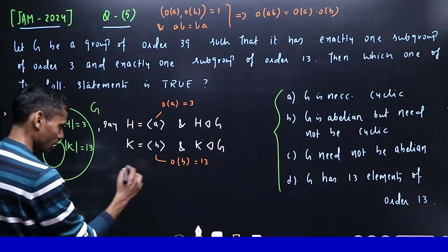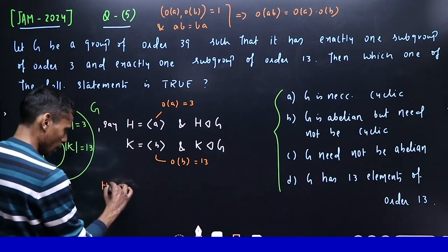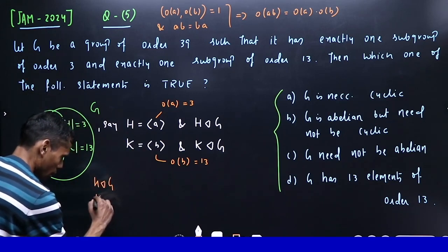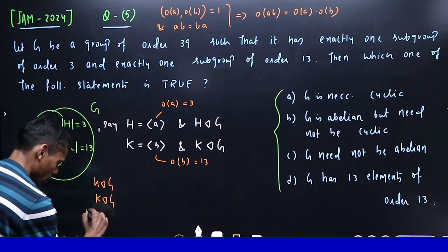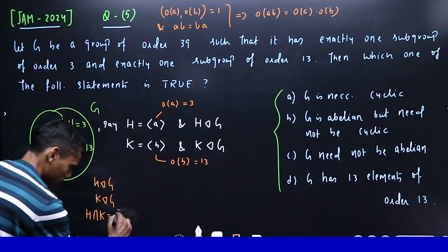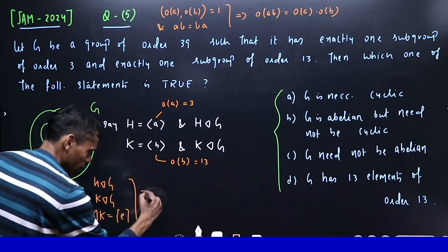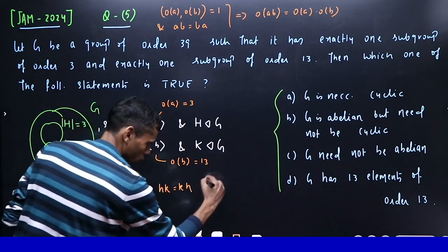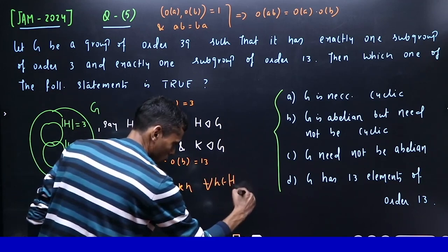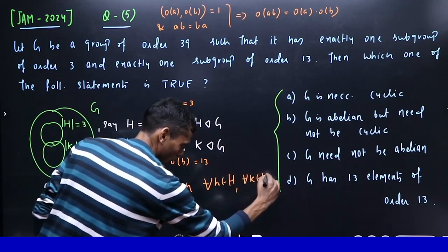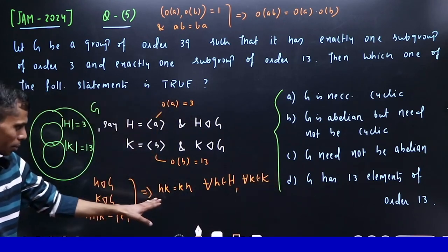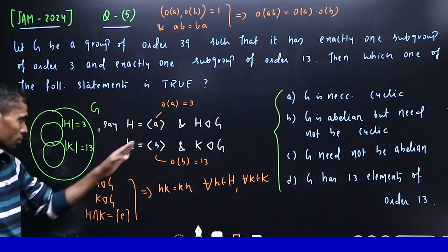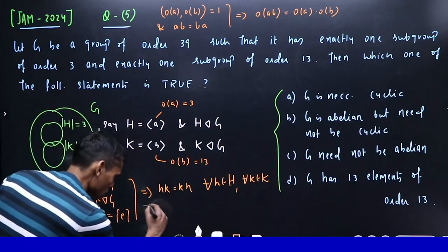H is normal in G, K is normal in G, and H intersection K is identity. This implies hk = kh for all h in H and all k in K. In particular, since a is in H and b is in K, ab = ba.